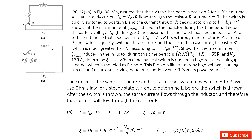Now look at part B — very similar. Initially the switch is at position A, so we have the battery, resistance R, and L. Suddenly the switch moves to B, and the battery is removed. The question asks us to show the maximum EMF induced in the inductor. When the switch moves to B, the current in the inductor continues and will be consumed by R-plus. So the current decays with time.